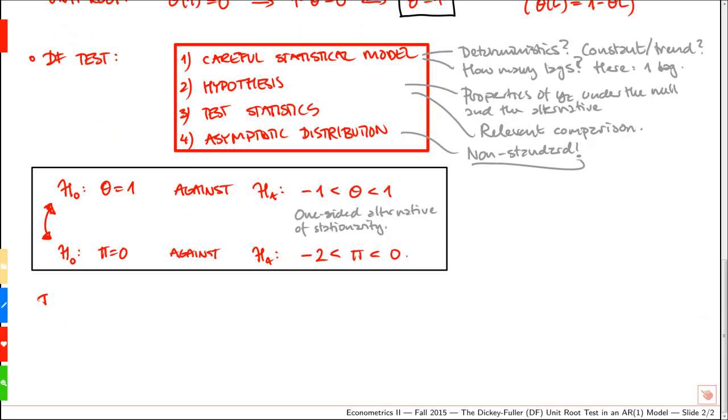So the test statistic is simply the t-stat: theta hat minus 1 divided by the standard error of theta, or equivalently pi hat divided by the standard error of pi hat. And under the null, this follows a Dickey-Fuller distribution.